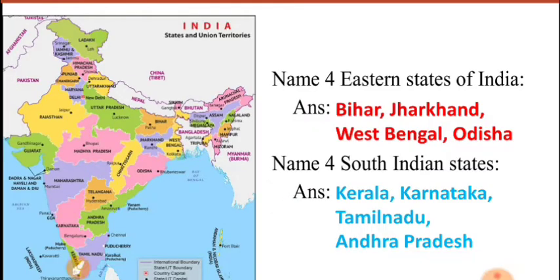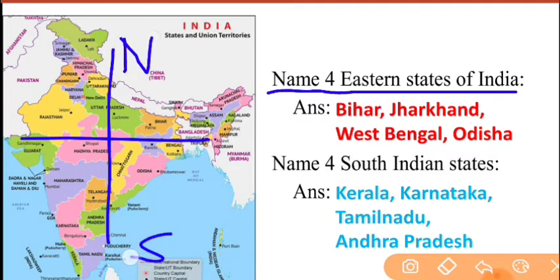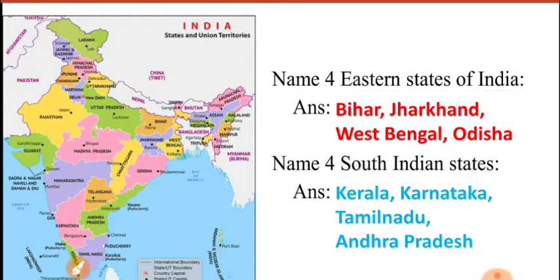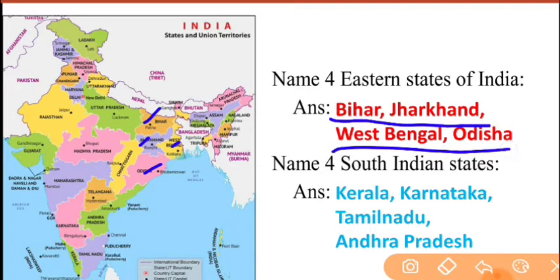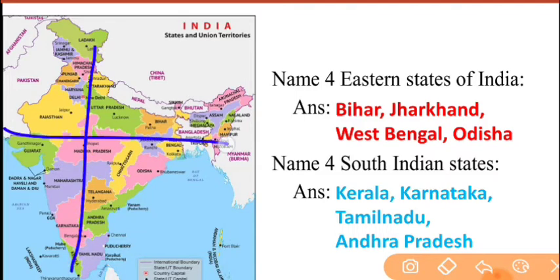Next, you have some questions based on the map of India, where all the states are shown. The first question: name the eastern states of India. If you draw the East side on the map, the eastern states include West Bengal and Odisha.